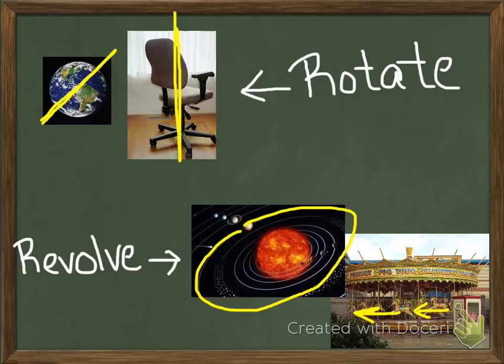Revolution is when I say a planet revolves around the sun. When you're actually revolving around the sun, you're going around this center point.